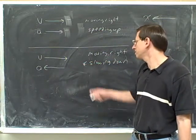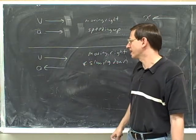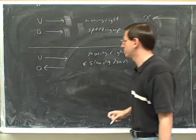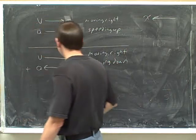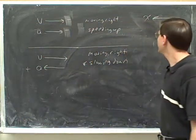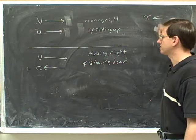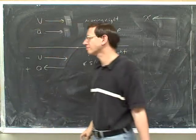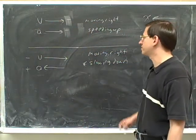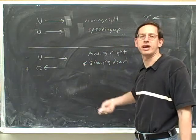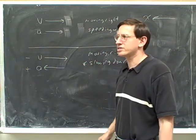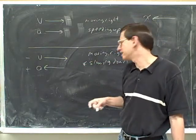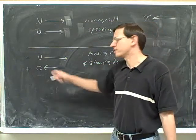Until you choose a positive direction, you don't know whether slowing down means positive or negative acceleration. If we chose to the left as our positive direction, then this acceleration is actually positive — the acceleration is to the left, and our positive direction is to the left. So even though we're slowing down, the acceleration would be positive; it would be our velocity that was negative. Slowing down is not synonymous with a negative acceleration.